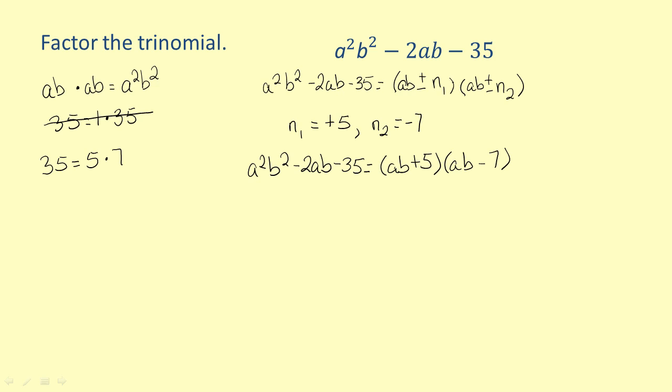Verify that the product of the factors produces the original trinomial. After multiplying the factors and combining similar terms, the result shows that the product is in fact the original trinomial, a squared b squared minus 2ab minus 35. So the factored form of the trinomial is the quantity ab plus 5 times the quantity ab minus 7.